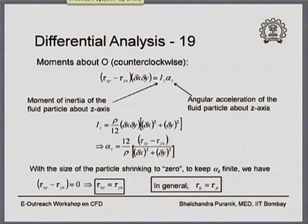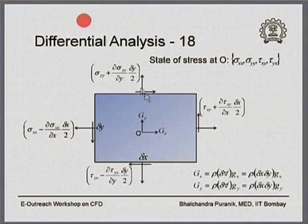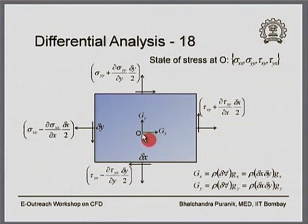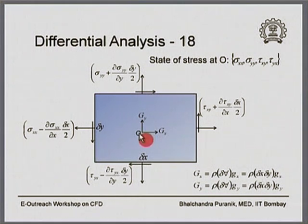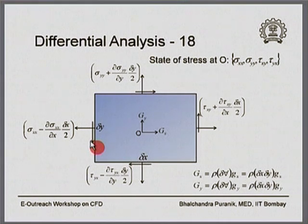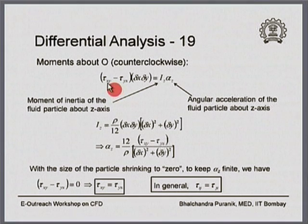One property of the shear stresses can be obtained by performing a moments balance for this fluid element. If you take moments of all forces about the center point O, the only moments that remain are because of the shear stresses. The normal stresses and body forces pass through center point O and therefore have zero moment arm. The shear stresses form an anticlockwise couple and a clockwise couple, giving a net anticlockwise moment equal to (tau_xy − tau_yx) × delta_x × delta_y.